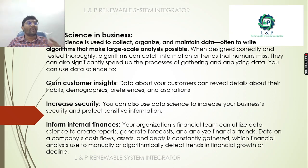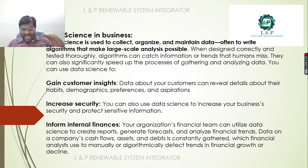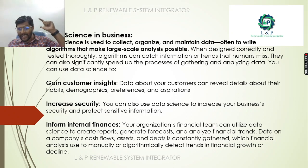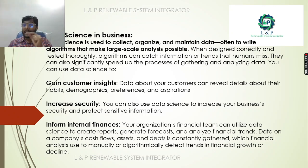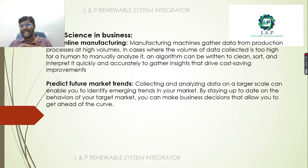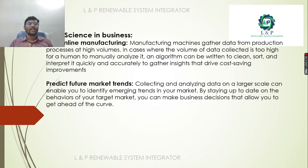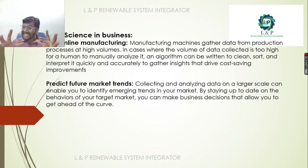Using algorithms and trends, we can identify if finances are improving or degrading before it actually happens. We can also streamline manufacturing — machines that gather data from the production process at very high volumes generate too much data for a human to manually analyze.